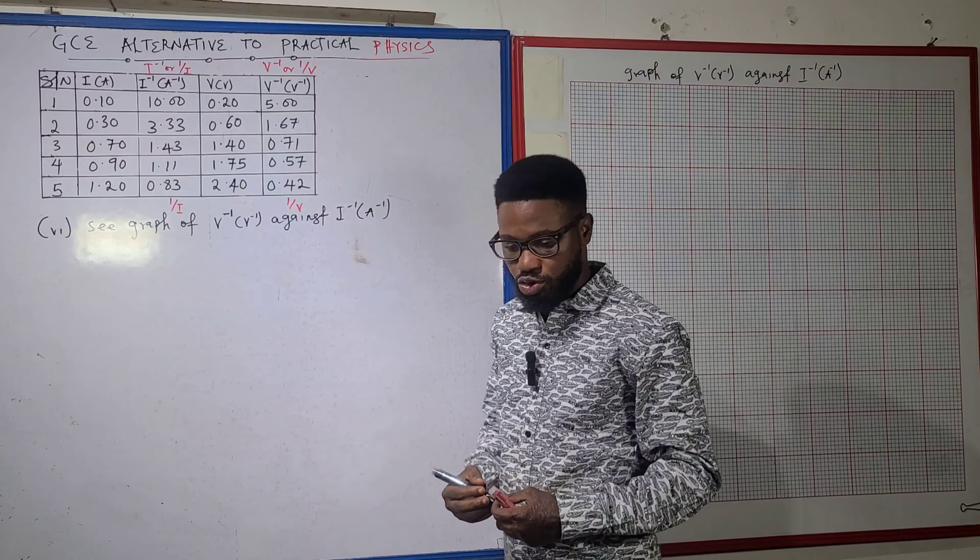Make sure the lines are very clean, straight, and unbroken — be mindful of that so you don't miss out on valuable marks. The next step is to set up the practical axes. Avoid broken lines. My vertical axis is V⁻¹ in per volt, and my horizontal axis is i⁻¹ in per ampere.